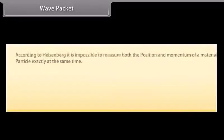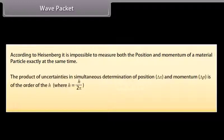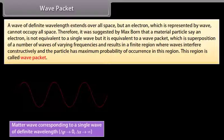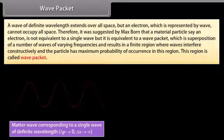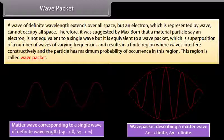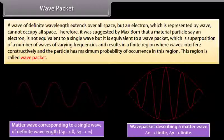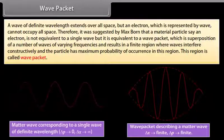According to Heisenberg, it is impossible to measure both the position and momentum of a material particle exactly at the same time. The product of uncertainties in position Δx and momentum Δp is of the order of ħ (h/2π): Δx · Δp ≈ ħ. A wave of definite wavelength extends over all space, but an electron cannot occupy all space. Max Born suggested that an electron is equivalent to a wave packet — a superposition of waves of varying frequencies — where the particle has maximum probability of occurrence.